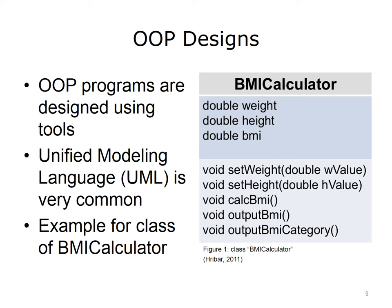On the right side of the slide is an example design for a class called BMI Calculator. In this class, assume three instance variables — doubles that store the weight, height, and body mass index, or BMI. The methods for this class include: set weight, which sets the value of the weight instance variable; set height, which sets the value of the height instance variable; calc BMI, which calculates the BMI and stores it in the BMI instance variable; output BMI, which prints the BMI value to the screen; and output BMI category, which outputs the weight category for the stored BMI. Note that this design is for a class-based approach, not the simple main-method-only program from previous lectures.